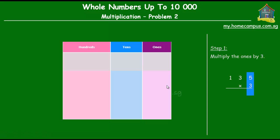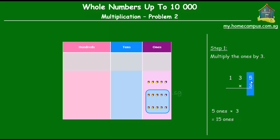The first step is to multiply the ones by 3. There are 5 ones, so we put 5 ones there and we multiply the 5 ones by 3, giving us 3 times as many ones. So 3 sets of 5 ones is equal to 15 ones. But we can't have 15 in the ones place, so we regroup. We take 10 of those ones and regroup that into a 10. So 15 ones equals 1 ten and 5 ones.